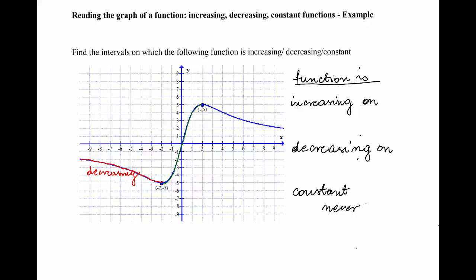The graph rises until we reach the point (2, 5). This part is increasing. Once we reach the point (2, 5) and continue on the graph, the graph starts going down — the graph falls — and therefore this part is decreasing. So now we only have to figure out the interval for which each part is defined.